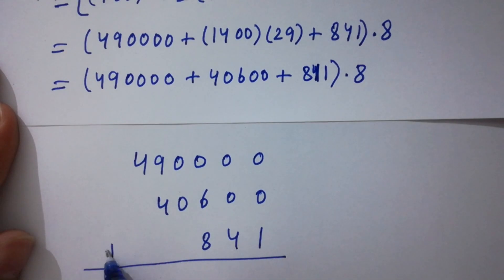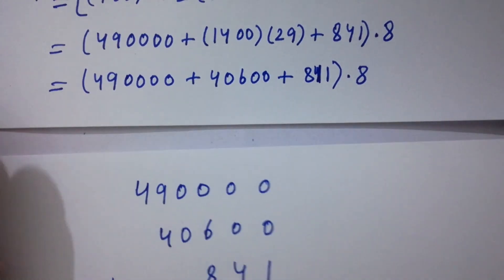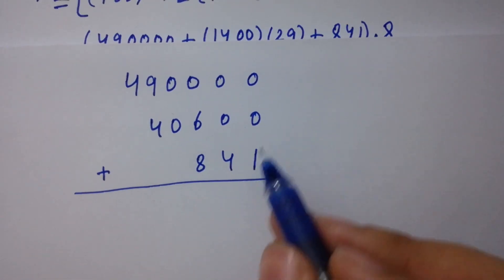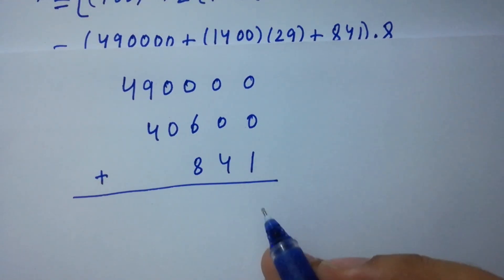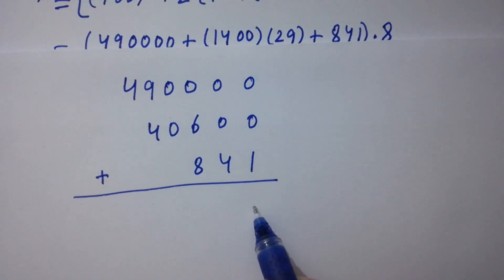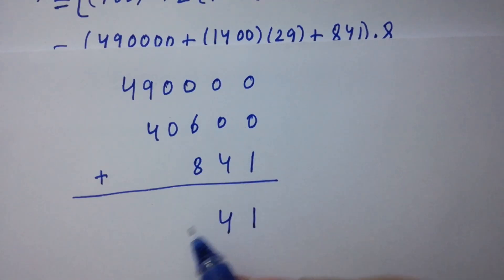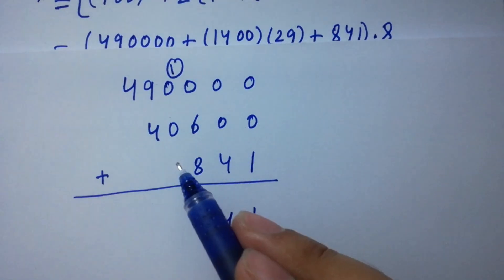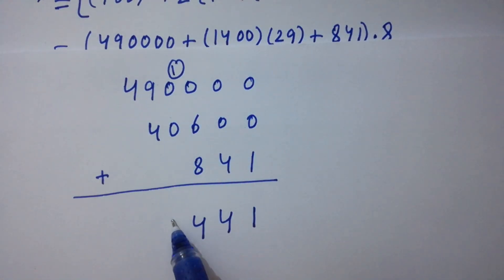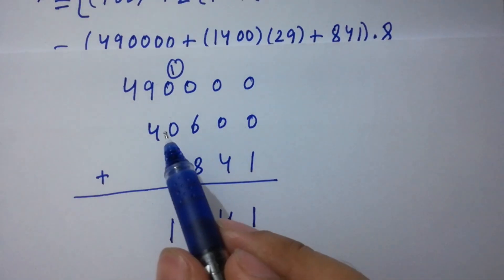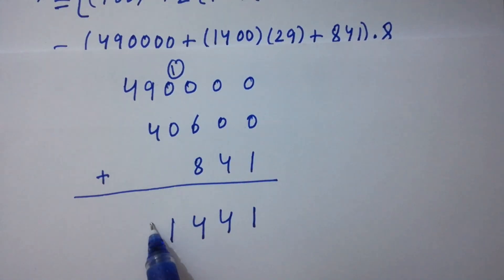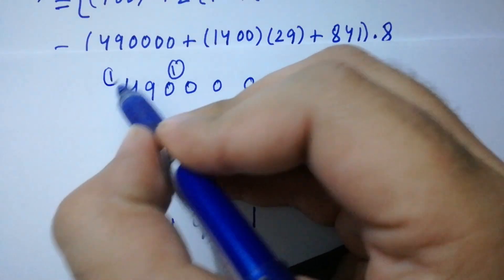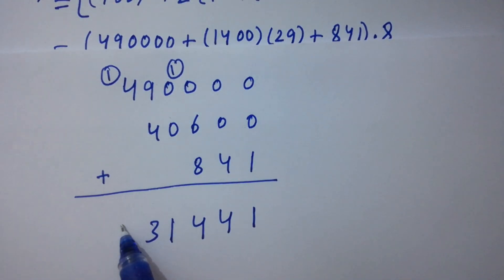Add them, then we have 0 plus 0 plus 1 is 1, 0 plus 0 plus 4 is 4, 6 plus 8 is 14, so 4 here with 1 carry. Next 1 plus 0 plus 0 is 1, next 9 plus 4 is 13, so 3 here with 1 carry. Next 4 plus 1 is 5.